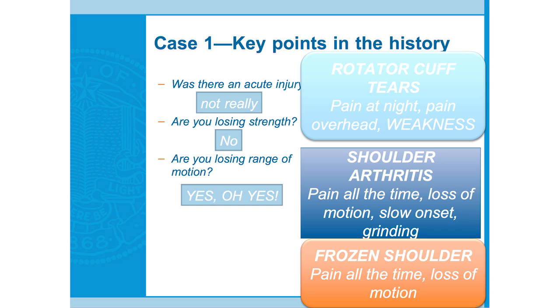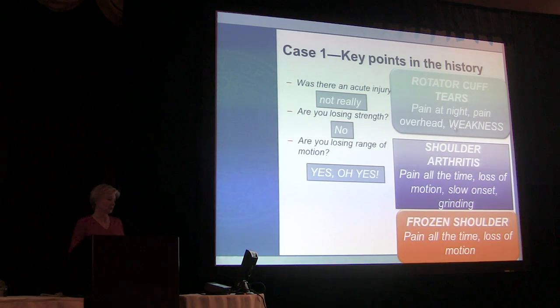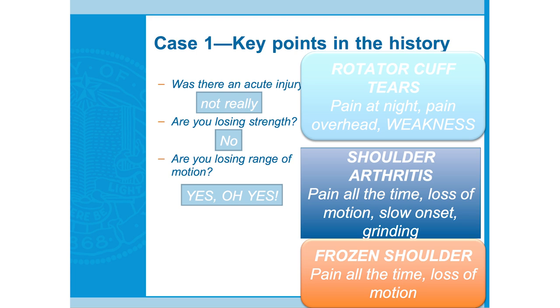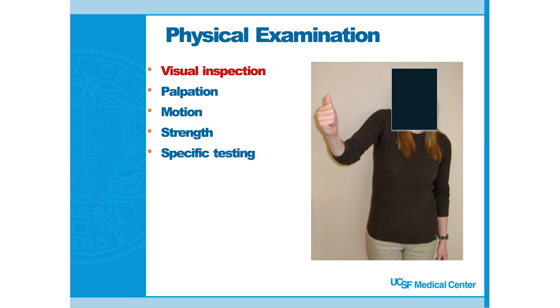She has pain at night, doesn't really complain about weakness, no grinding, has loss of motion, and fast onset over just a few months. The most likely diagnosis is frozen shoulder. Dr. Feely will cover the physical exam, but these patients often have very restricted range of motion. The big differentiator versus shoulder OA is they don't have grinding when you move them through range of motion — but they're very restricted, especially with external rotation.